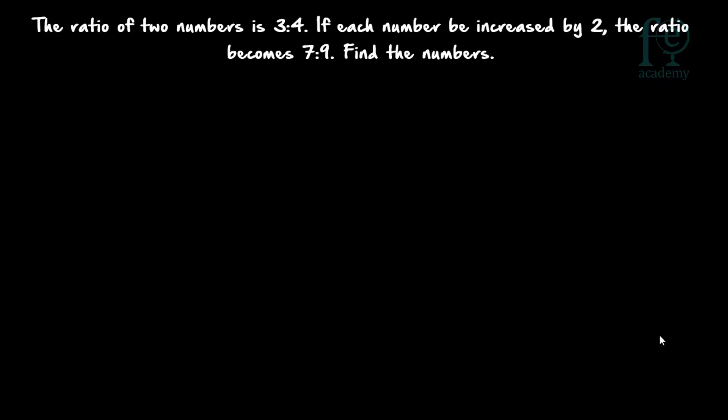Hi friends, welcome to today's class. Today's question is: the ratio of two numbers is 3 is to 4. If each number be increased by 2, the ratio becomes 7 is to 9. Find the numbers.